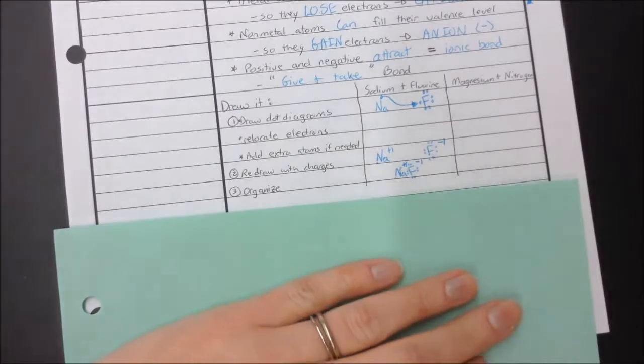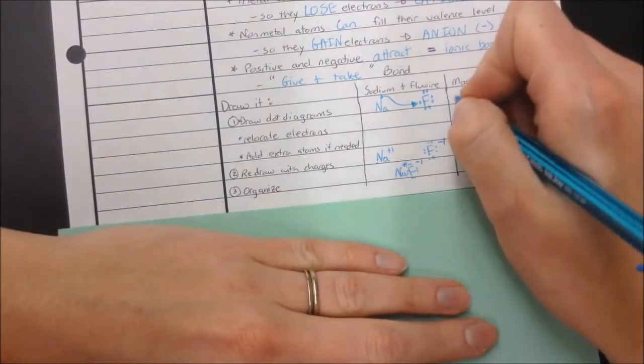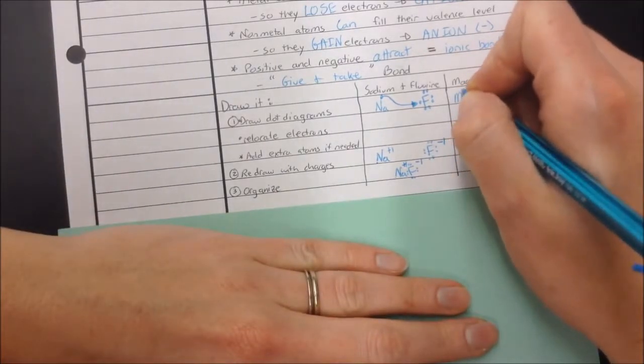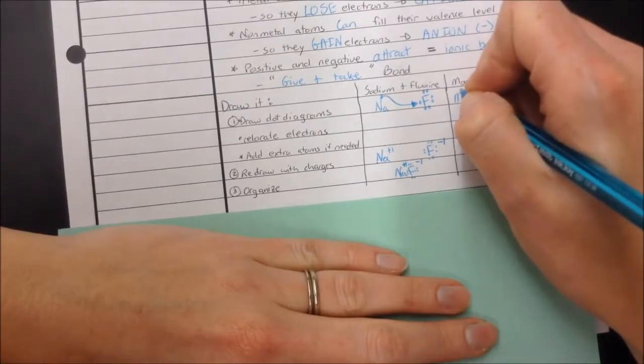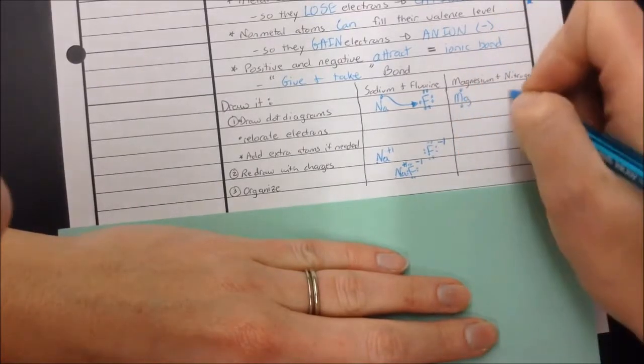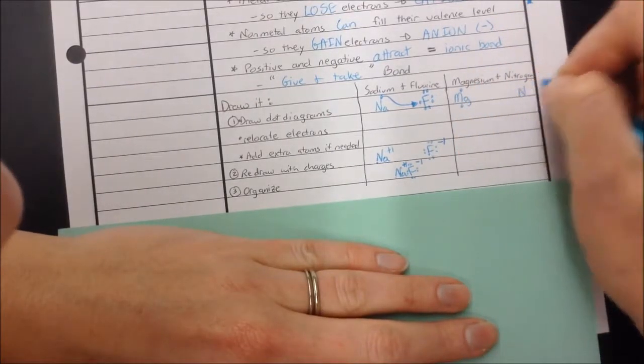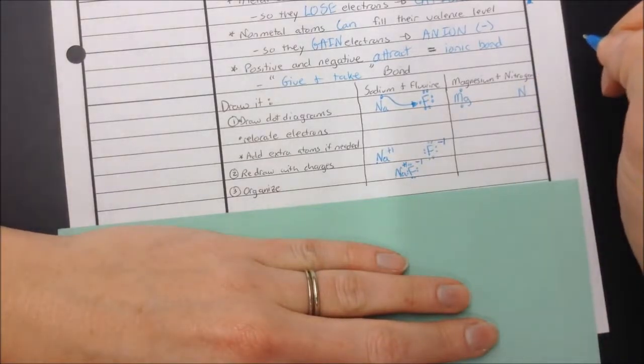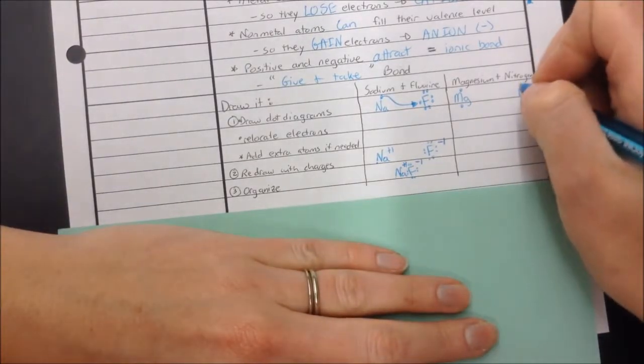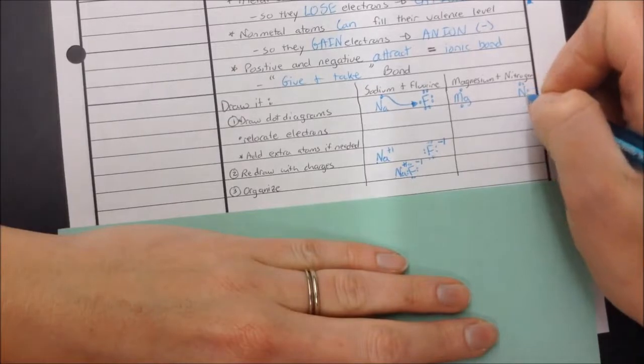Now let's try magnesium. Magnesium is not going to be quite as easy because magnesium is Mg, which is in the second column and it has two dots. And nitrogen is N. It's 1, 2, 3, 4 over, which means it's 8, 7, 6, 5 dots.